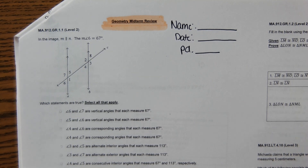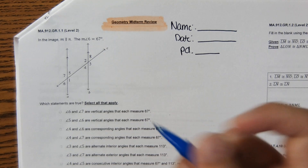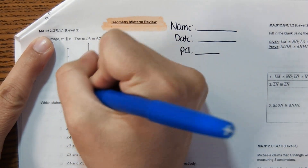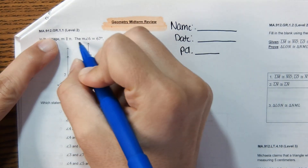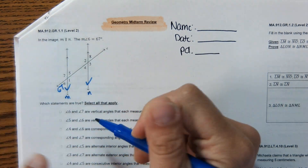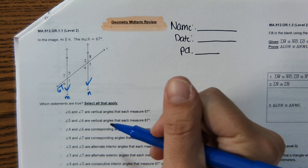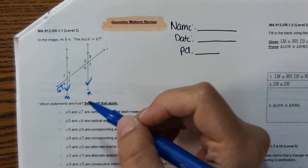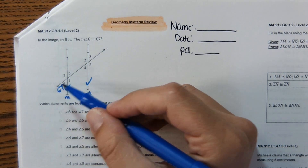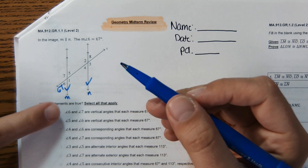The first problem states that in the image, line m is parallel to line n. The measure of angle 6 is 67 degrees. It says select all that apply regarding angle relationships and angle measures. With these parallel lines and a transversal, there are a lot of angles that are congruent.